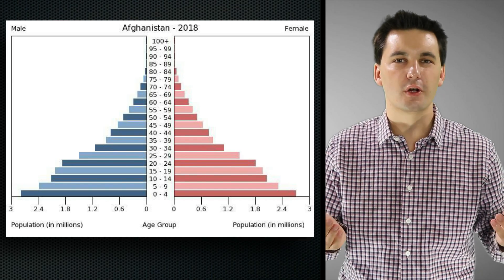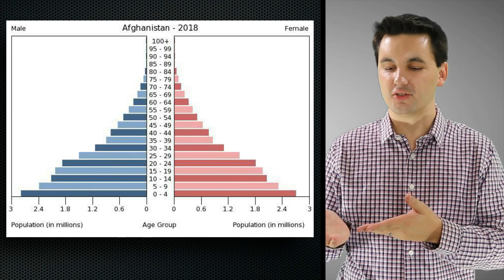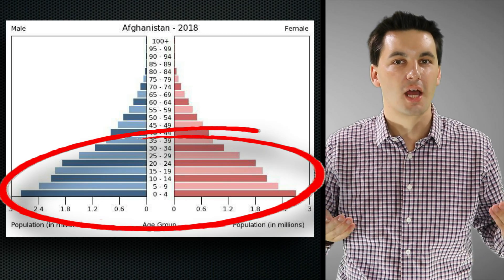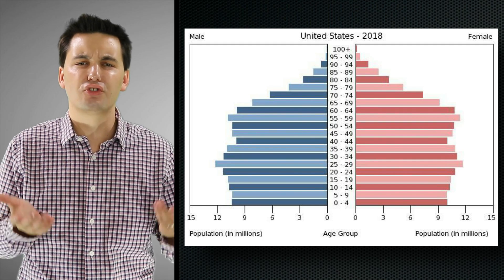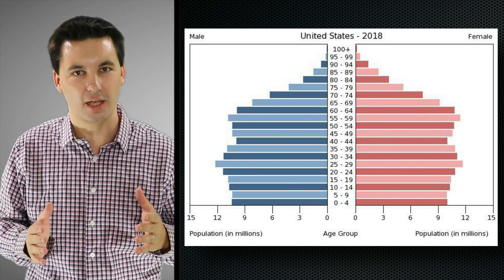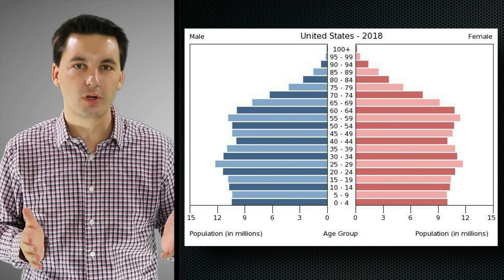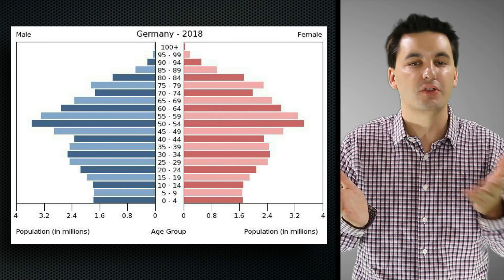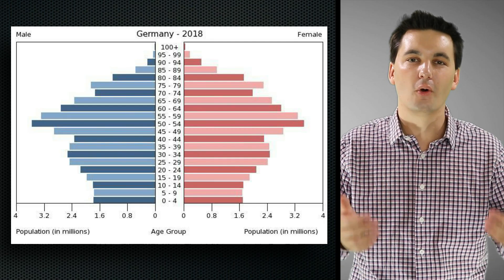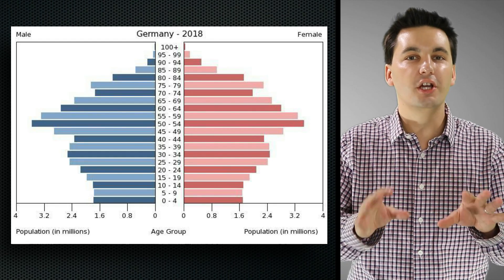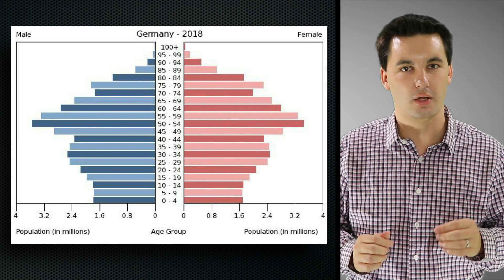Looking further at pyramid shapes can give even more insight. A pyramid with a really big base indicates a booming population with a lot of growth coming. A pyramid that's more filled out — evenly distributed across ages — suggests a stabilized, slower growth rate. A pyramid with a massive top means the majority of the population is older, and we'll likely see a population decrease or decline. We'll connect back to this when we cover the demographic transition model.